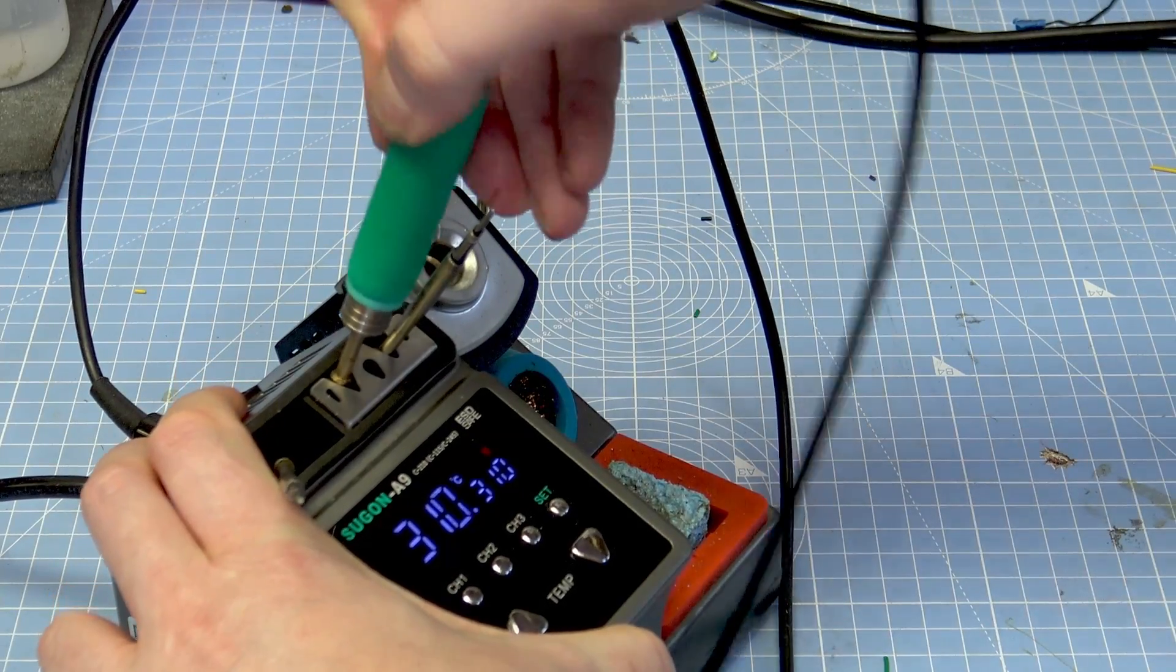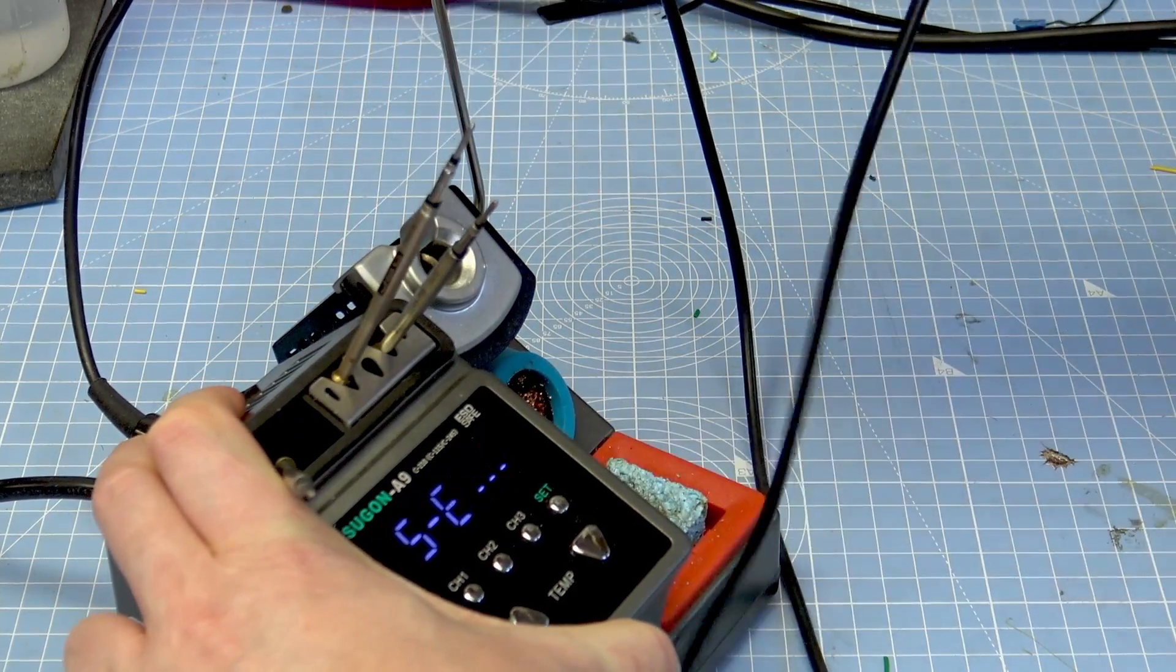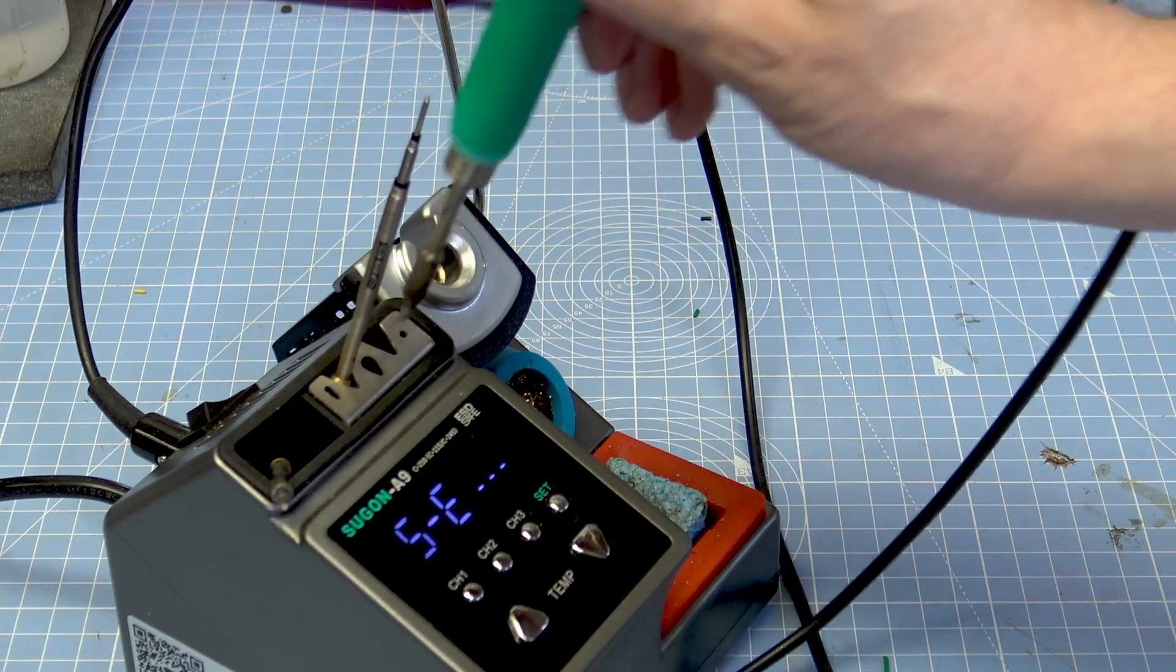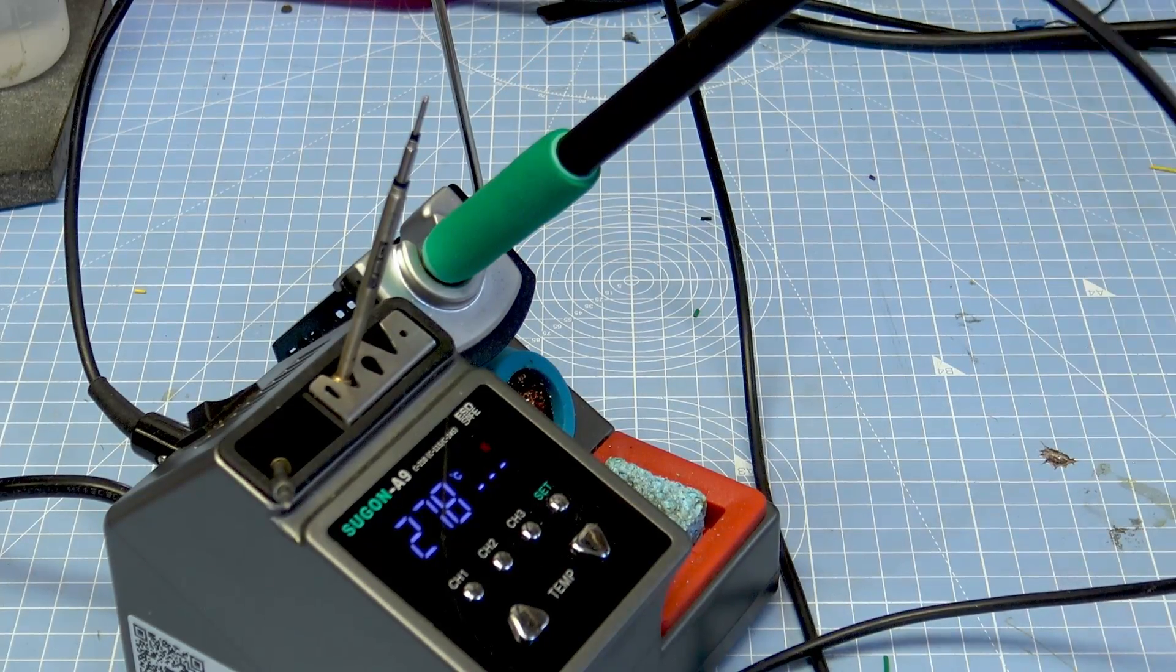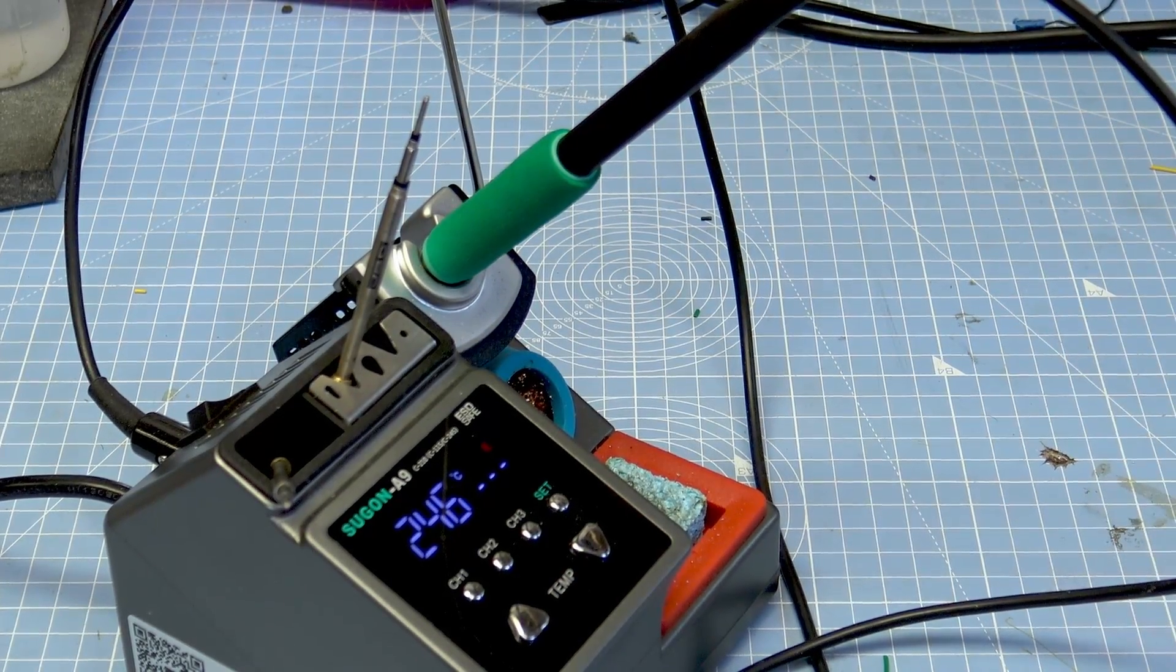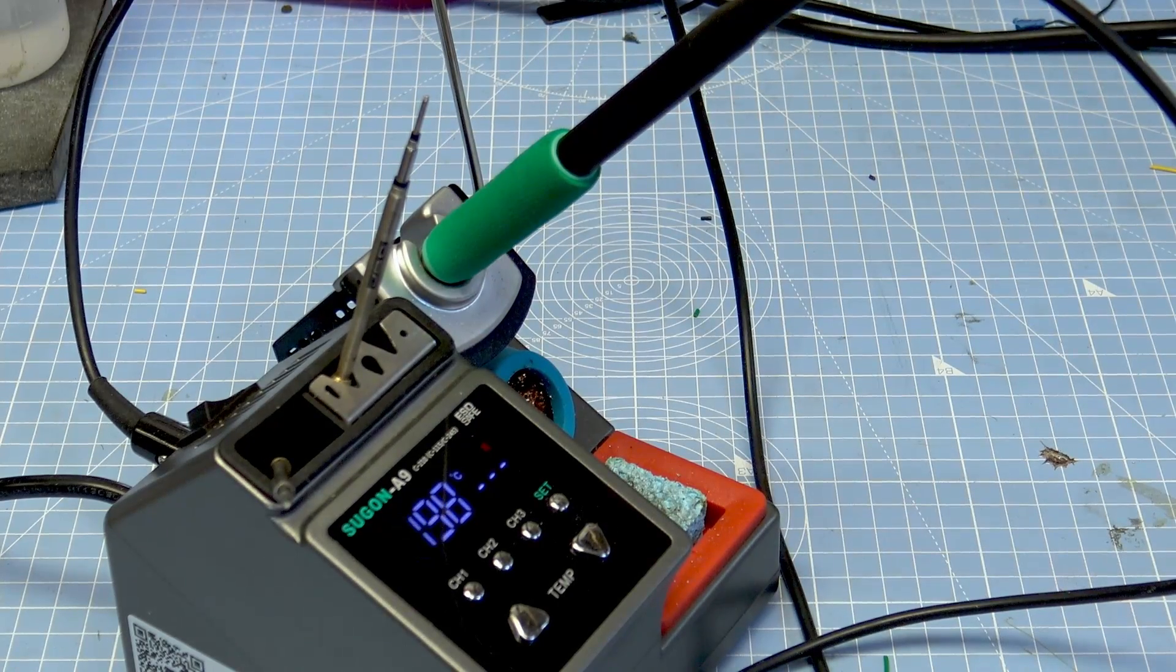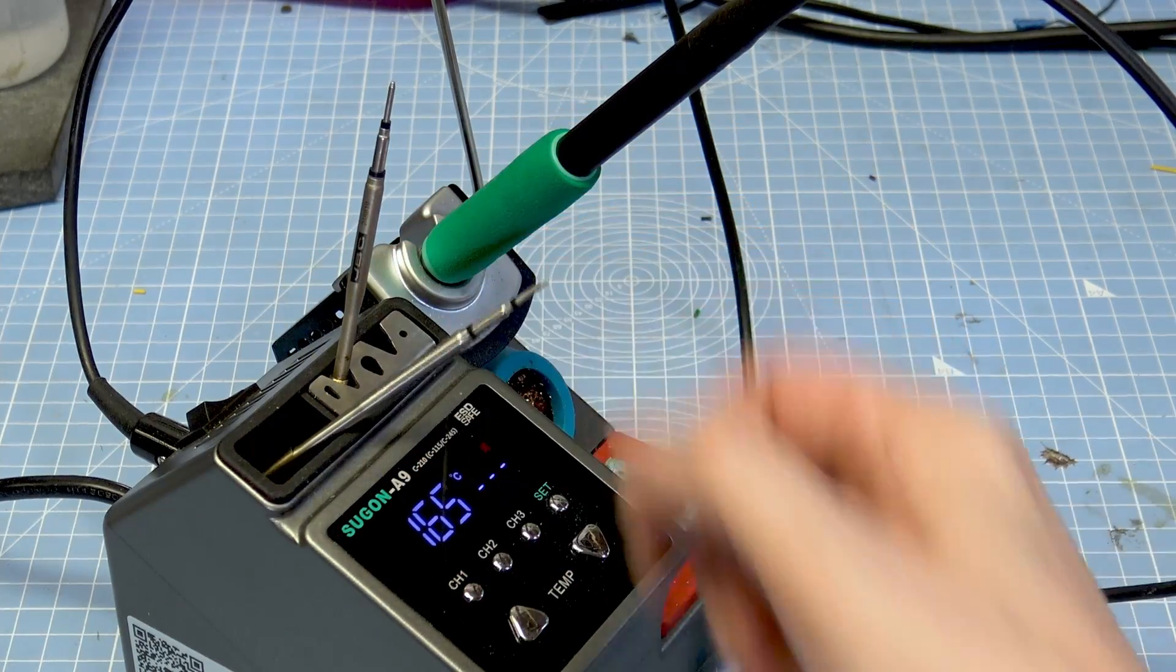This tip is longer than the others, so it's a little bit more difficult to get it in. That is one thing that I would say I didn't like about this station. If you've got some of the weird and wonderful JBC tips, they're going to be a bit difficult to do the swap over. But you can see it's pretty easy to do the swap over. Same goes for the one that came with it.